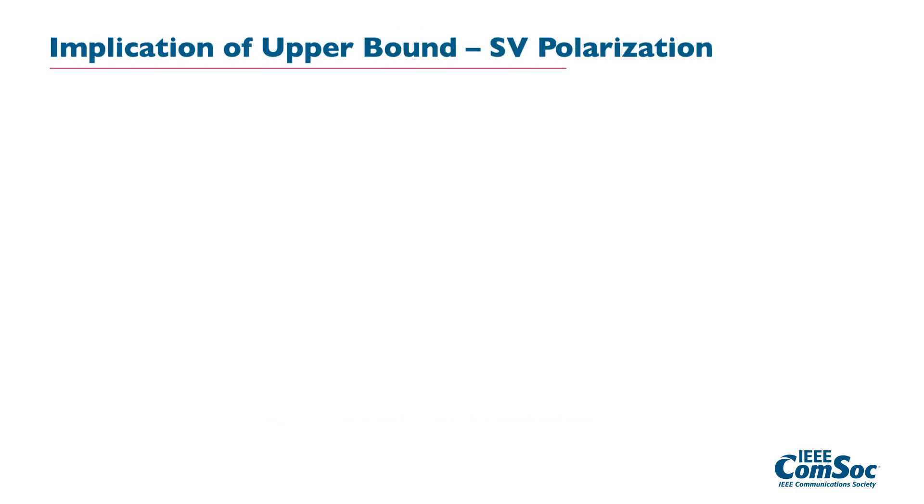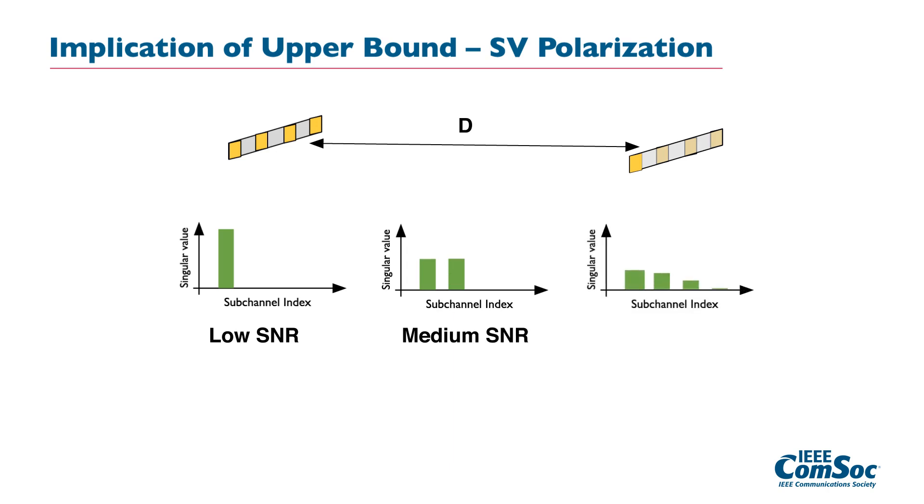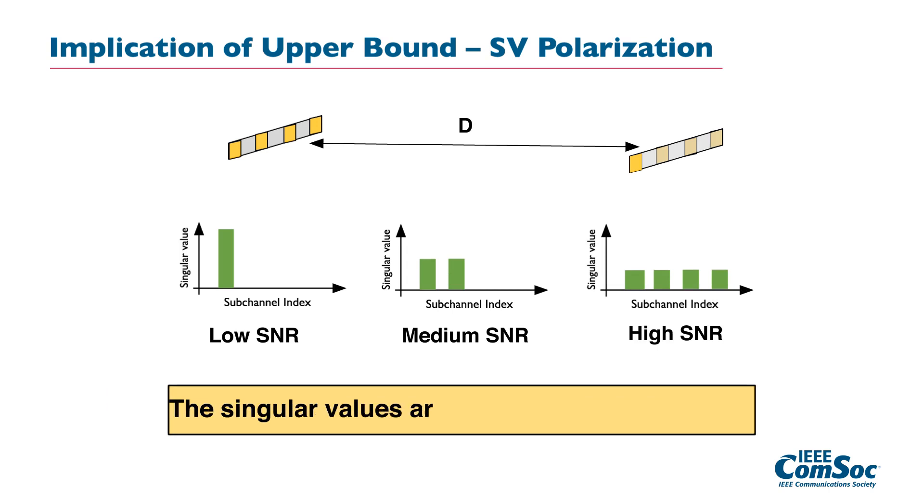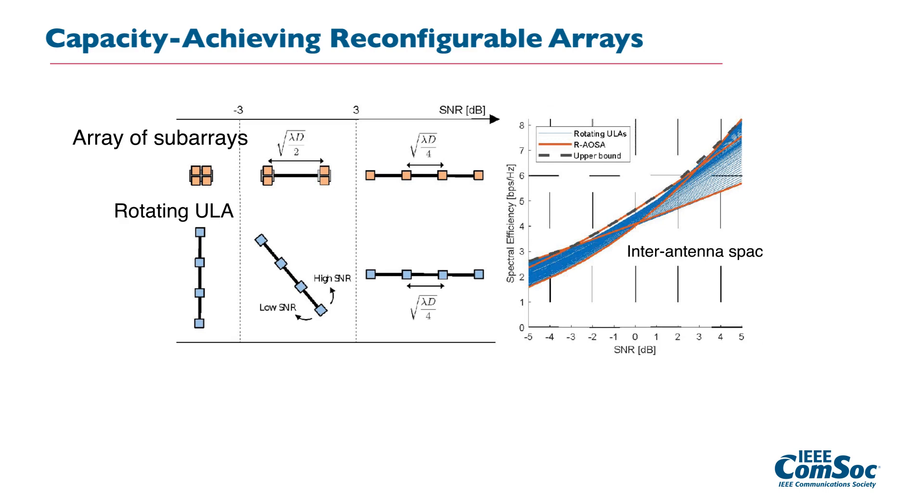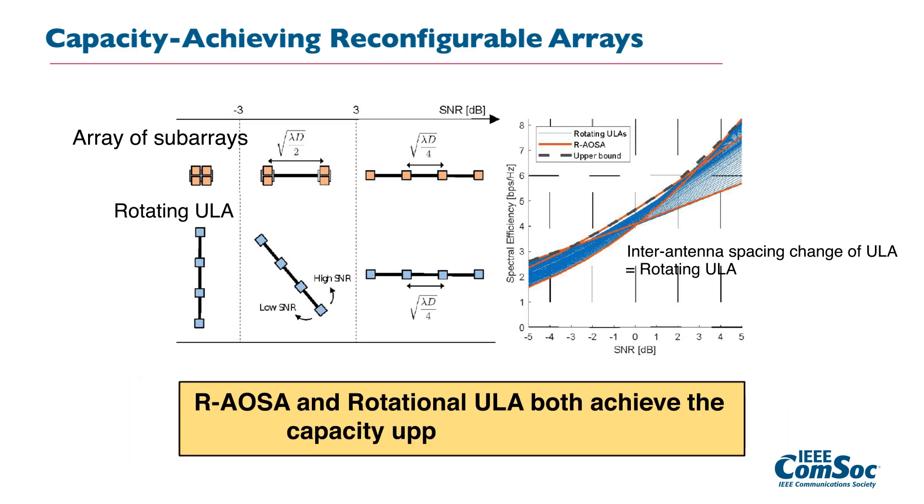To better understand the upper bound, we consider the following 4x4 MIMO channels and what upper bound says is that the singular values depending on the SNR should be polarized in two states: known all equal non-zero eigenvalues or zero eigenvalues. Then the question is, how can we achieve this bound? In other words, how can we construct such a line-of-sight MIMO channel to have the polarized eigenvalues depending on the SNR?